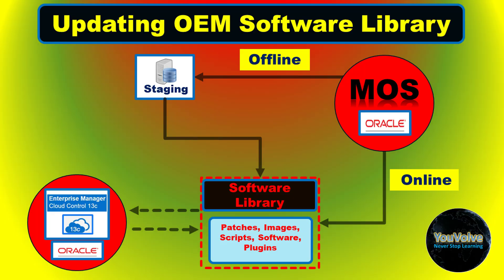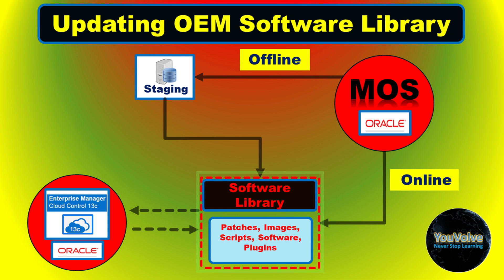The OEM software library is a repository that stores software entities such as software patches, virtual appliance images, reference gold images, application software, scripts, etc. In addition to storing them, it also enables you to maintain versions, maturity levels, and states of these software entities. It is one of the core features offered by Enterprise Manager Cloud Control where both Oracle owned and user owned entities can be stored.